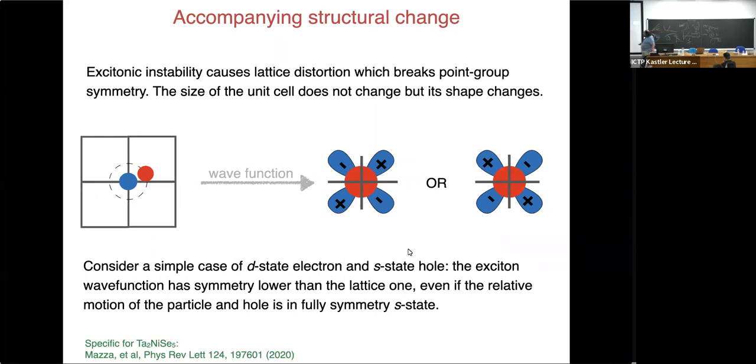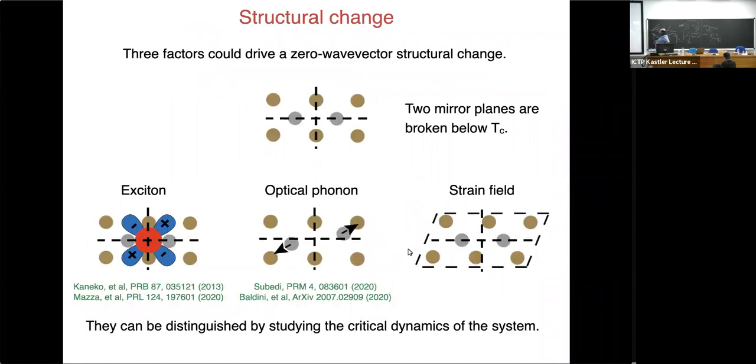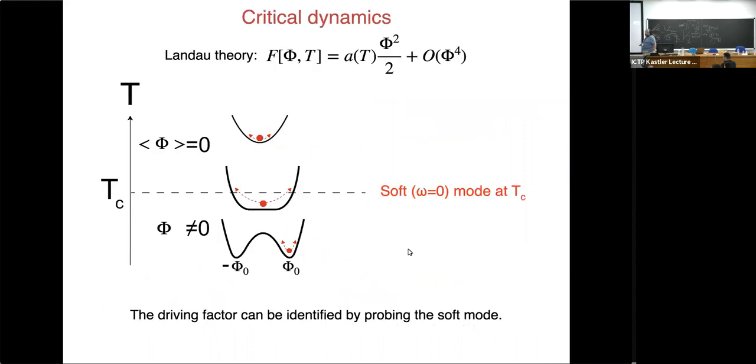Accompanied with structural change because as soon as we break the symmetry, and this symmetry breaks the mirrors. Also, there is lattice distortions that come with it. And then the question is what drives the transition. So the transition could be driven by electronic part excitons, condensation of excitons. It could be by softening of optical phonon, or it could be a strain field. Basically, ferroelastic transition.